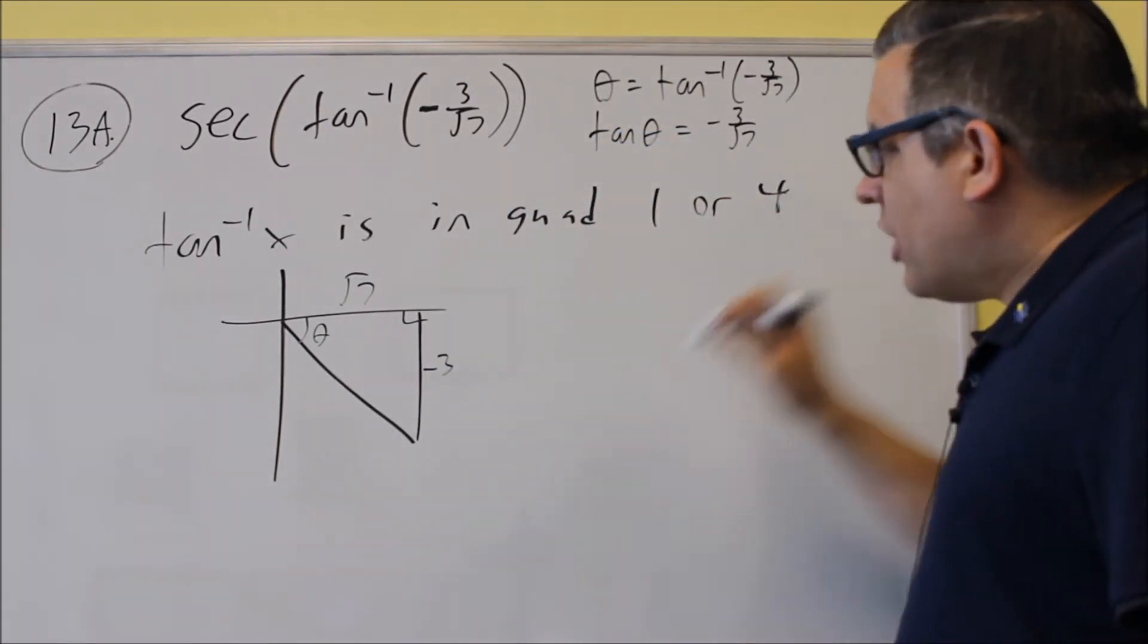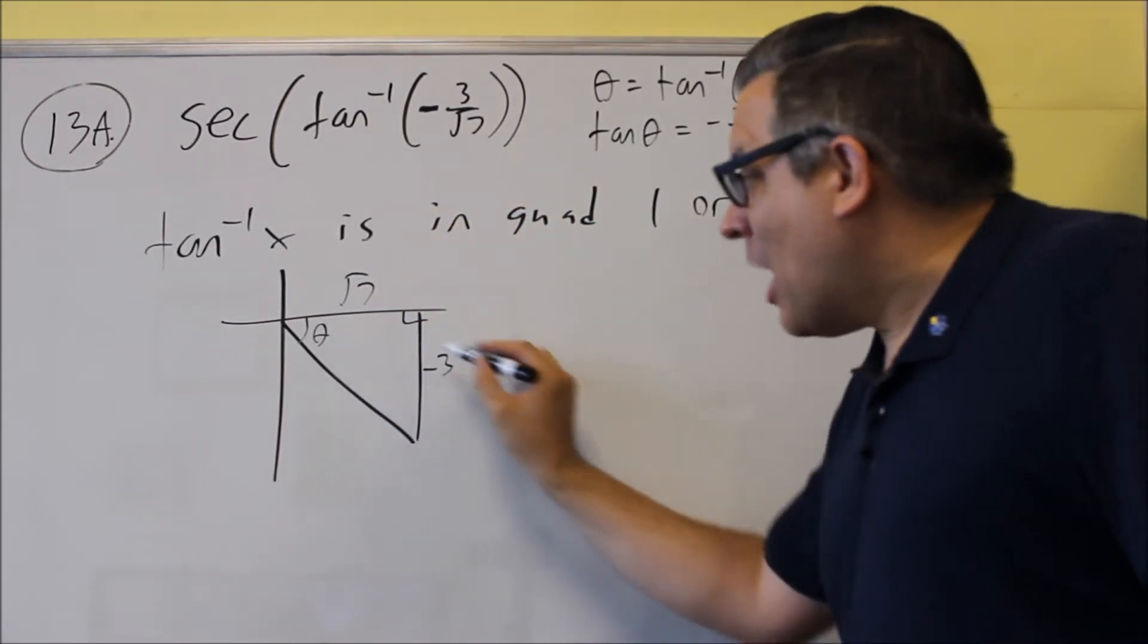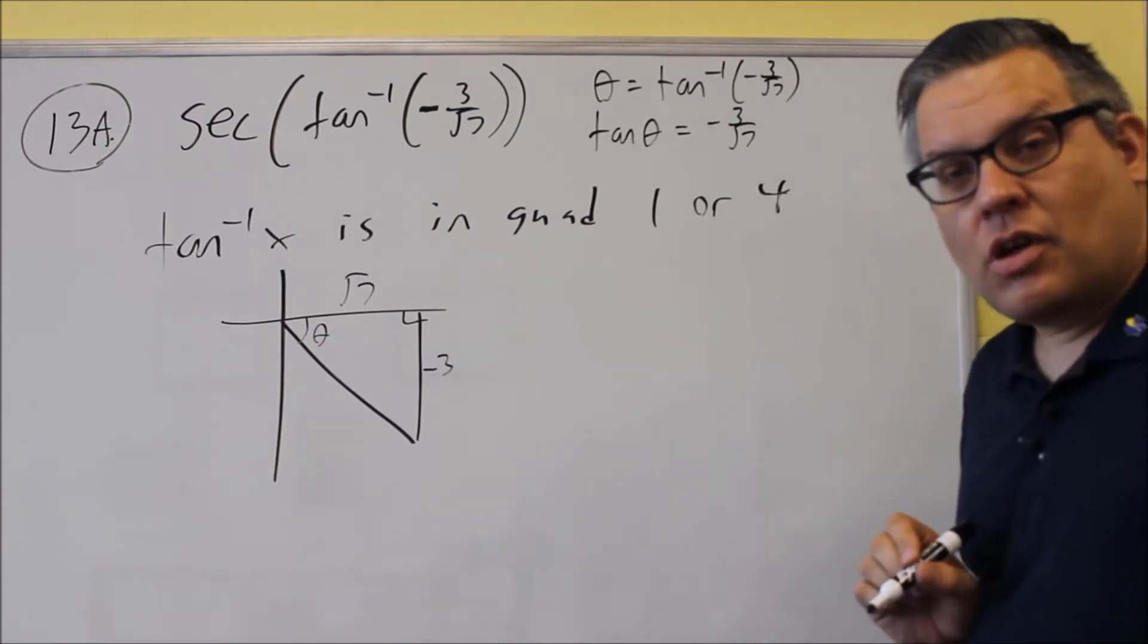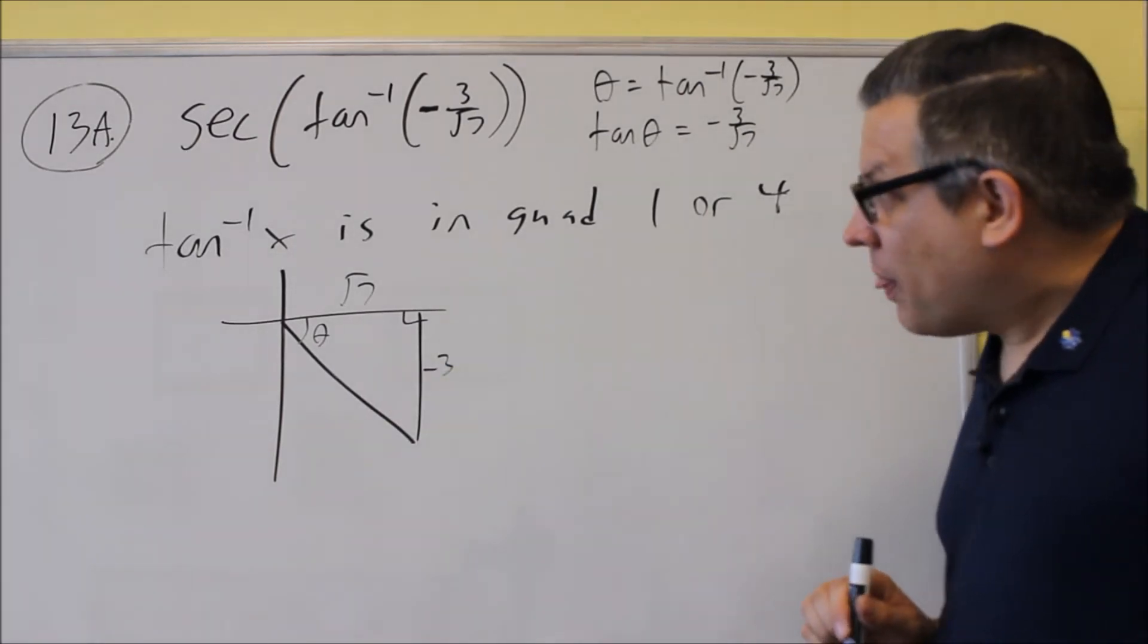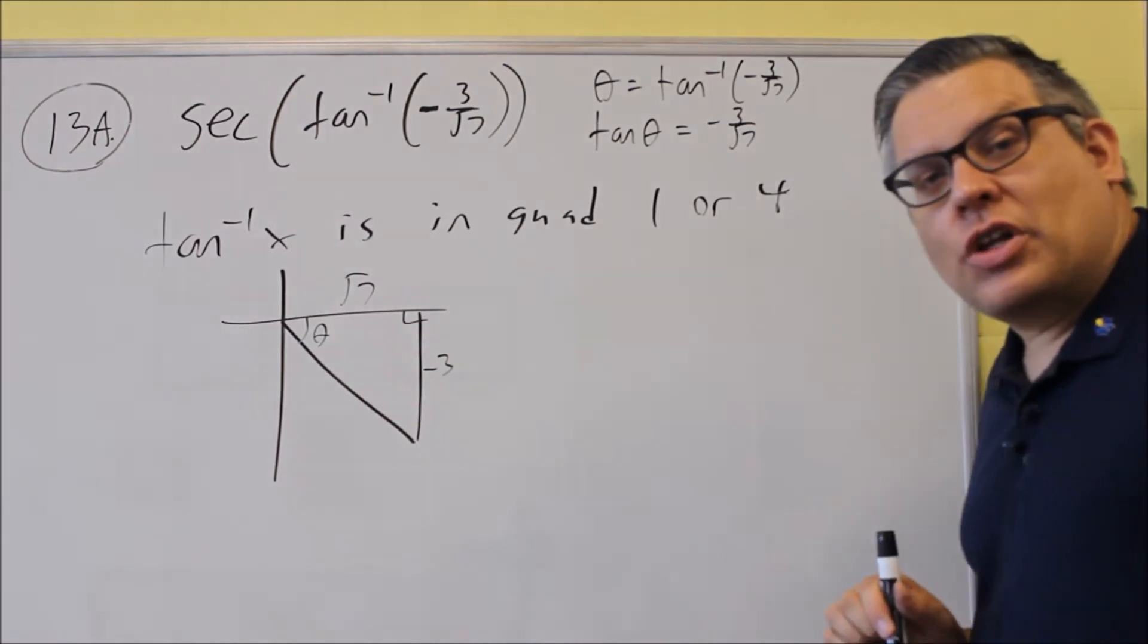So from that, we have square root of 7 and we have negative 3 is going to go down below. Again, opposite over adjacent. We've got to find the missing one because the definition for secant involves the hypotenuse. So we need to find that one.